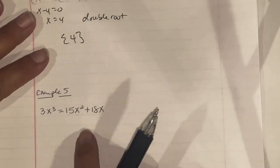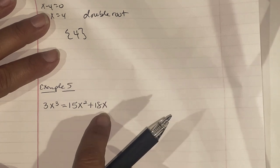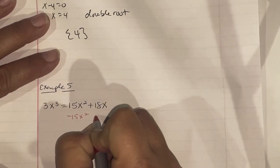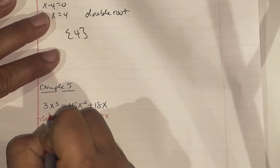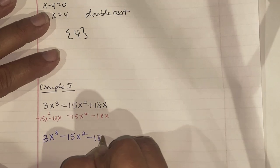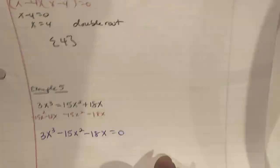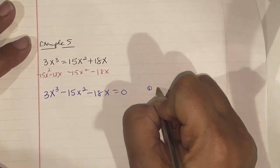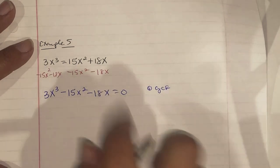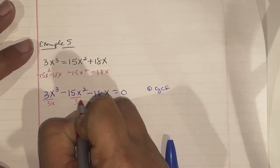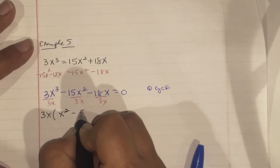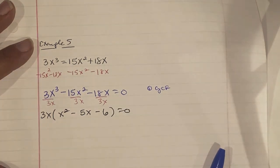Example 5 says 3x³ = 15x² + 18x. Since the highest degree term is on the left, we move everything to the left by subtracting 15x² and 18x, giving 3x³ - 15x² - 18x = 0. We need to pull out a GCF: 3, 15, and 18 are all divisible by 3 and all have an x, so we factor out 3x, leaving 3x(x² - 5x - 6) = 0.